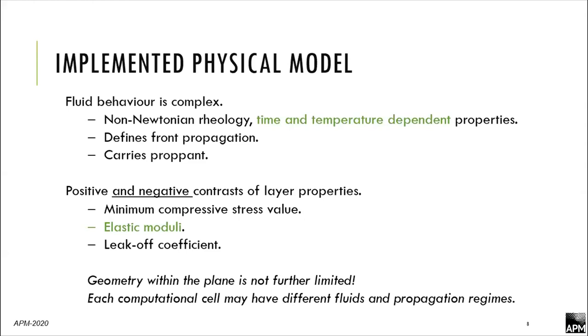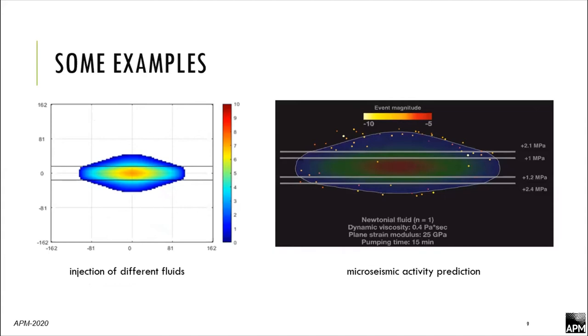This is an example of calculation of micro-seismic activity that we predict based on our fracture propagation. You can see that these natural fractures that are activated by the main fracture are mainly positioned near the front, so it allows us to find these particular fractures that will be activated by our hydraulic fracturing, and we can filter fractures that we don't want to consider.